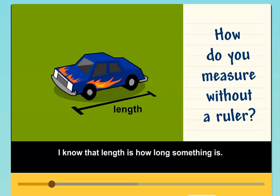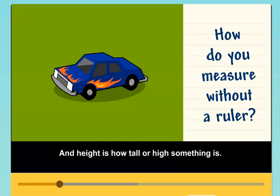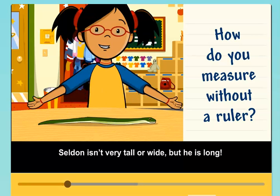I know that length is how long something is. Width is how wide something is. And height is how tall or high something is. Seldon isn't very tall or wide, but he is long.